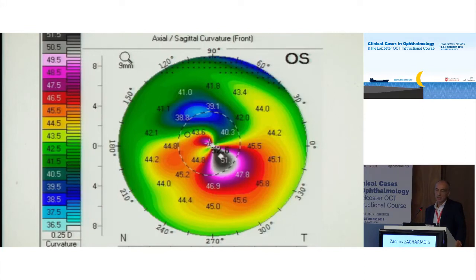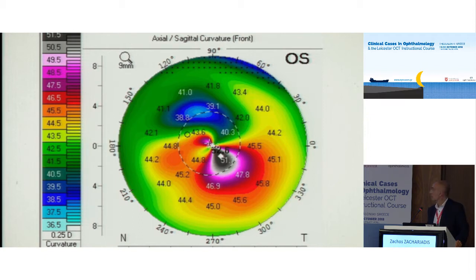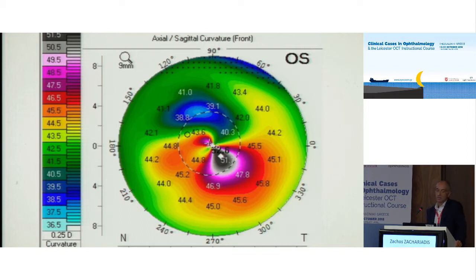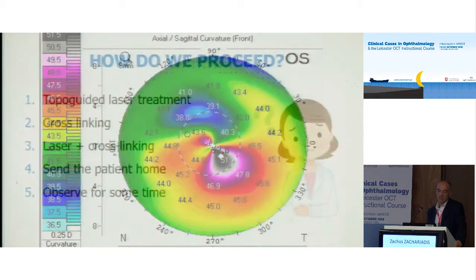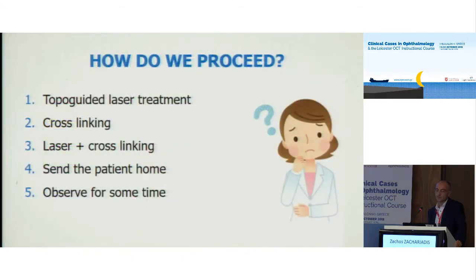The first case is a 20-year-old patient with myopic astigmatism who wants laser surgery. We did topography and you can see the steepness is 51. So the question is — he's young — what are we going to do?